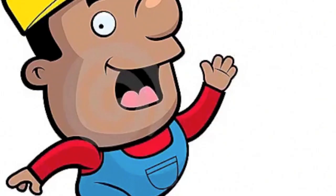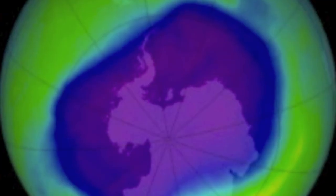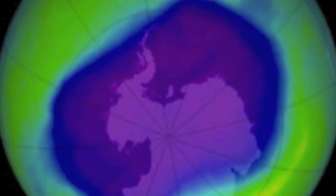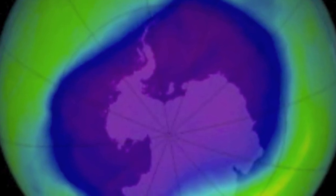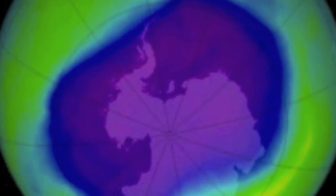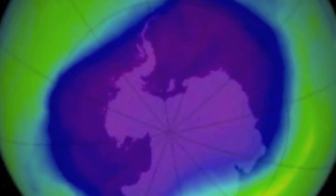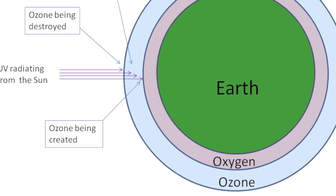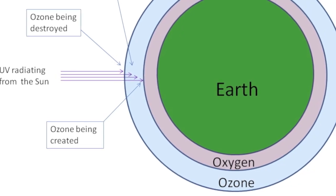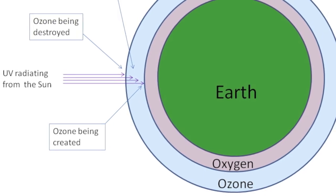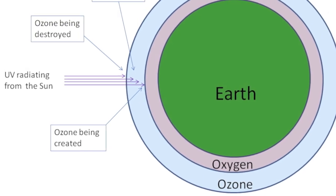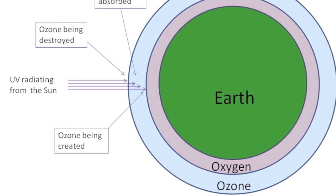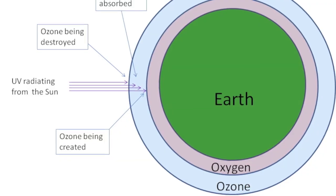But after humans came along, the presence of Oxygen in the atmosphere has been depleted, which is causing the ozone layer to disappear. The ozone layer is extremely important to life on Earth as it absorbs harmful ultraviolet radiation. Without it, life on Earth would not exist.